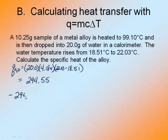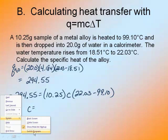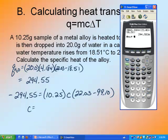Switch the sign, negative 294.55 is equal to my mass 10.25 times the specific heat, which is what I'm solving for, times the change in temperature. Now they both have the same final temperature, but initially it was 99.1. Switch the sign times negative 1 and divided by the product of everything on the right-hand side: 10.25 times 22.03 minus 99.1. Again, parentheses are your friend. Learn how to use them properly. And you get 0.373.